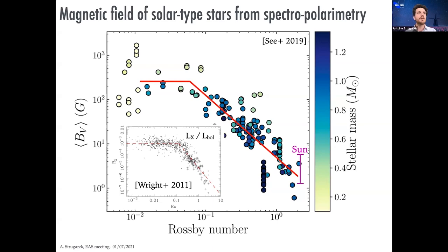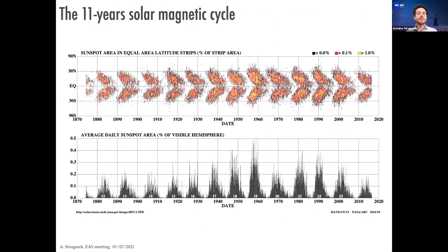When you think about magnetism you also naturally think about variability in time. Most of you know about the famous 11-year solar cycle, represented here as a butterfly diagram — you see the shapes of butterfly wings which trace the location where spots appear at the surface of the Sun. As the cycle progresses this appearance moves towards the equator, then there are almost no spots, and the next cycle occurs. On average it's an 11-year magnetic cycle, but it can vary by plus or minus two years.